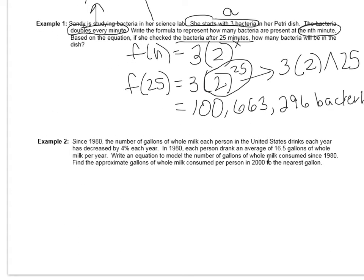Example 2 says, Since 1980, the number of gallons of whole milk each person in the United States drinks each year has decreased by 4%. There's that percent decrease that tips you off to the fact that you have to use the second formula instead of the first one. In 1980, each person drinks an average of 16.5 gallons of whole milk per year. So there's your A number.